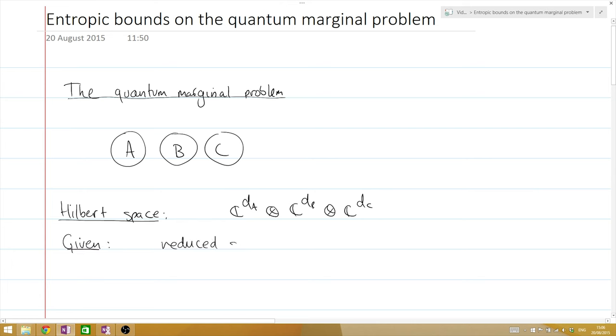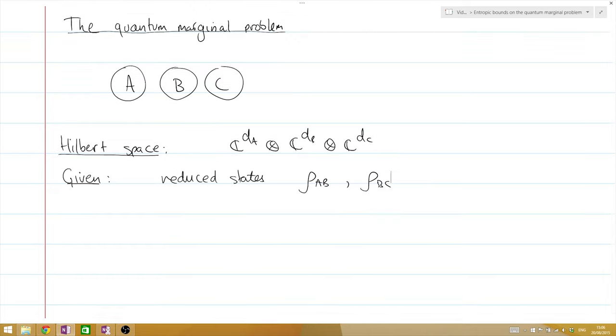We are given, in the quantum marginal problem, the reduced states on two bipartite subsystems AB and BC, and the task in the quantum marginal problem is then to find a global state of the full system, the full tripartite system A, B, and C, a global state rho ABC which is consistent with these two reduced states rho AB and rho BC.